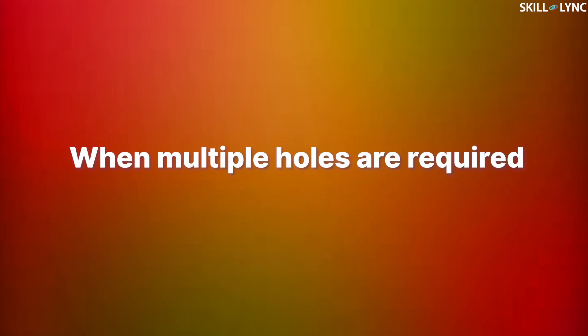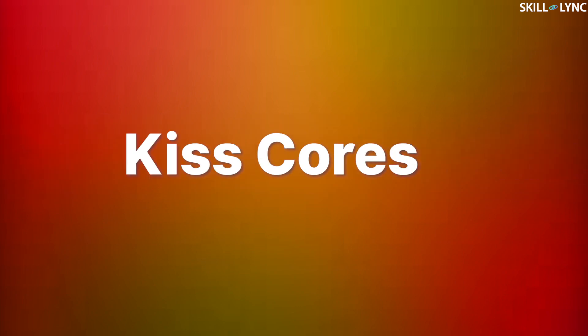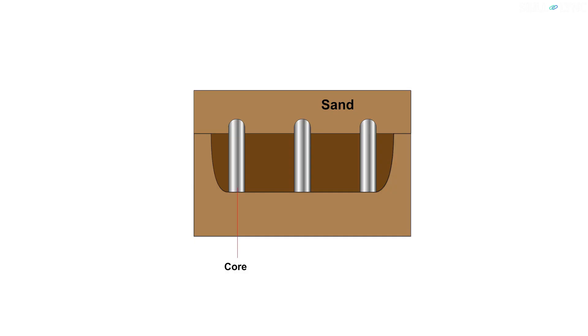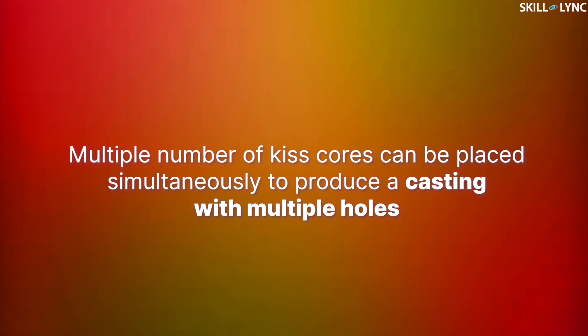Now are we done with all types of cores? Well, the answer is no. We're leaving out one very important type of core. This type of core is essential when the casting is required to have multiple holes. We're talking about kiss cores. These cores are positioned between the cope and the drag, as shown in the image. These cores do not require any support since they're held between the cope and drag due to the pressure applied by the cope on the drag. Multiple number of kiss cores can be placed simultaneously to produce a casting with multiple holes.